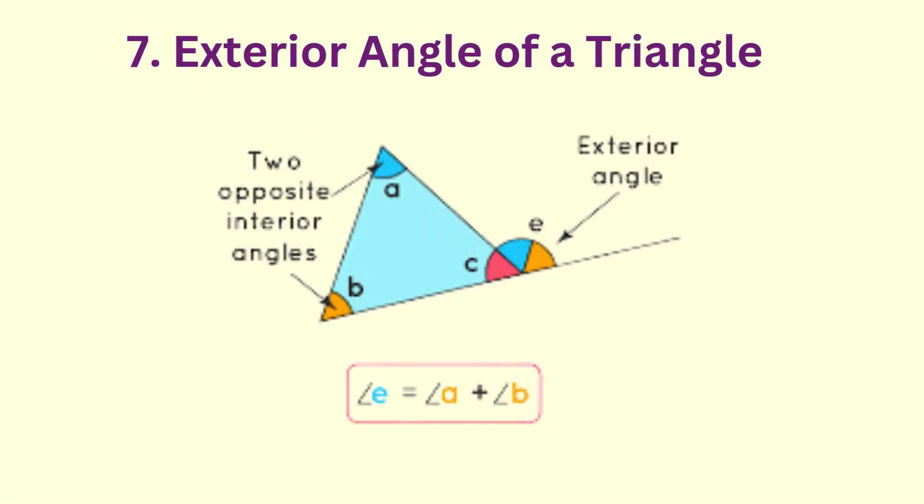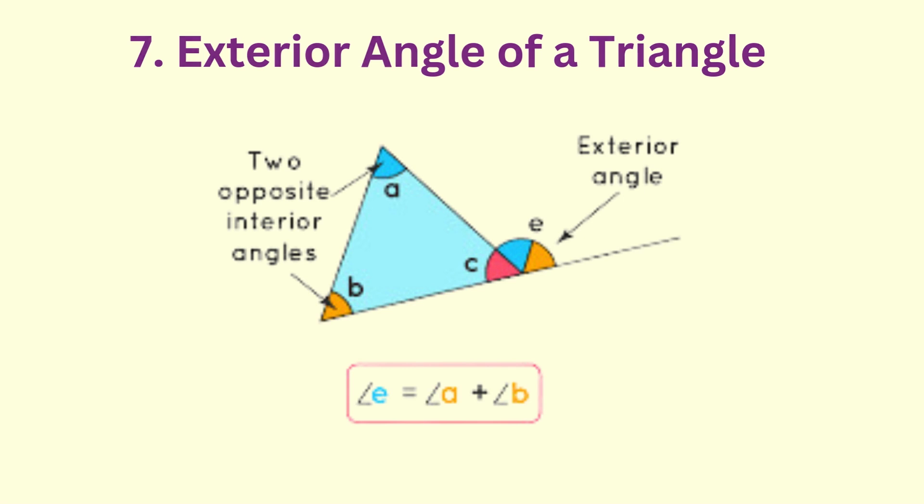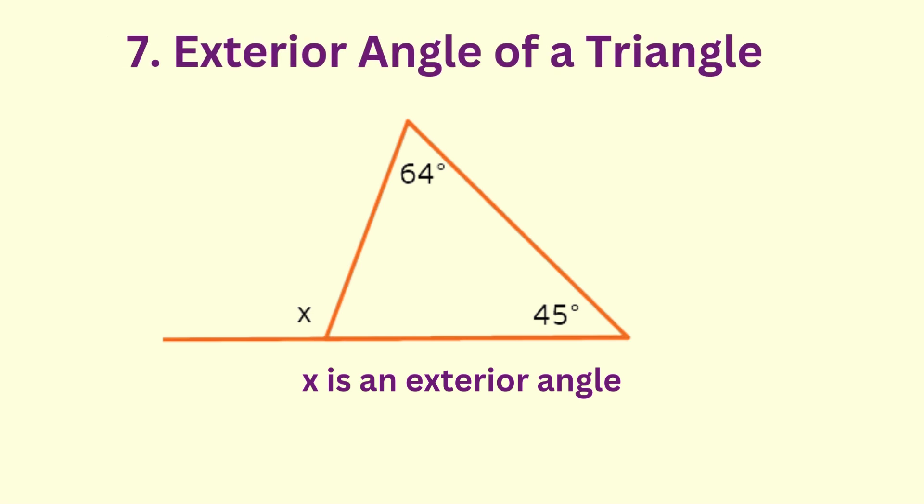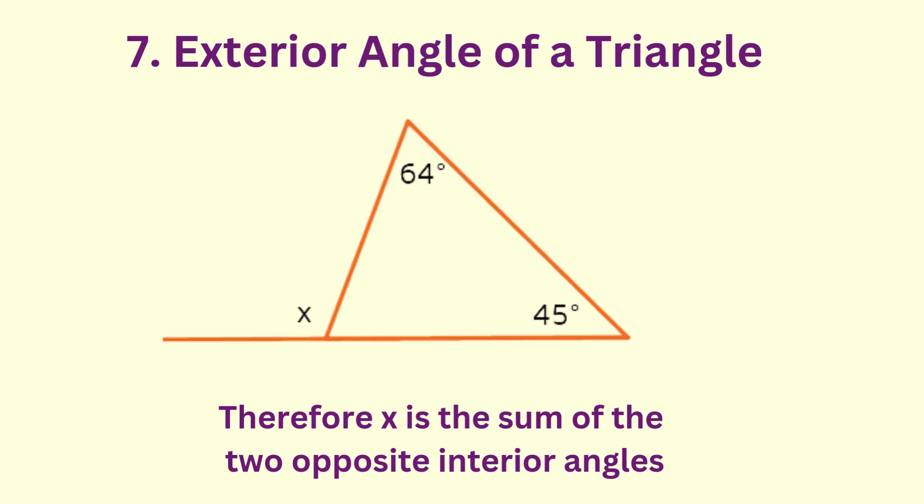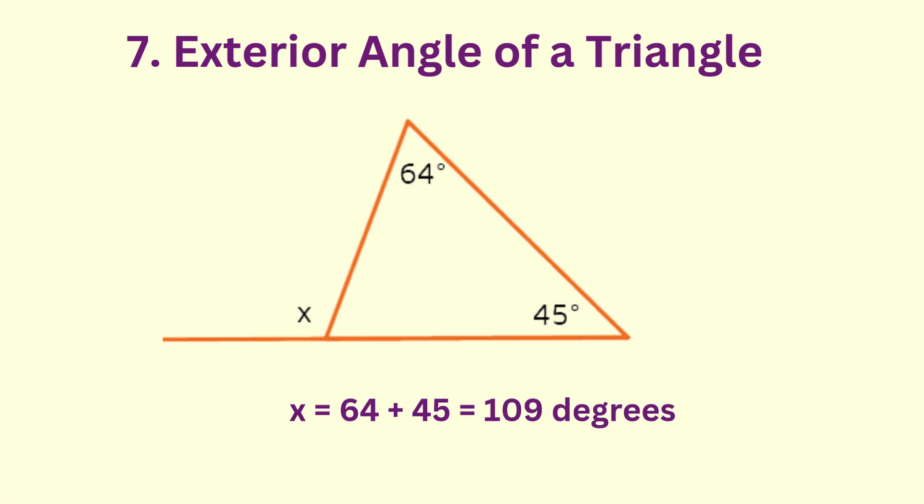The exterior angle of a triangle is equal to the sum of the two opposite interior angles. An exterior angle is formed by extending just one side of the triangle as shown in the diagram. In the example given, the exterior angle X is equal to the sum of the two opposite interior angles. So X is equal to 64 plus 45, which is 109 degrees.